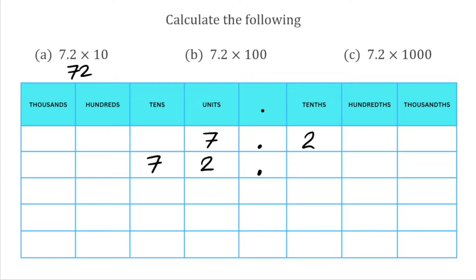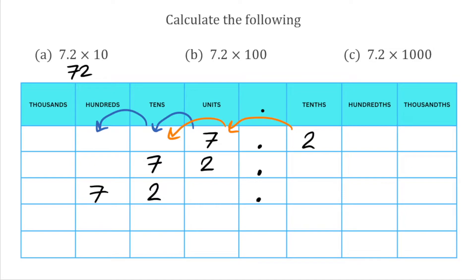So I've got 72 then my decimal point, so the answer is just 72. For the next question we've got 7.2 multiplied by 100. Because we're multiplying, we're going to move our digits to the left, and because 100 has two zeros we're going to move all our digits two places. Our original 7 in the units column moves two spaces to the left into the hundreds column. Our 2 from the tenths also moves two spaces to the left into the tens column. We don't have anything for our units so we put a placeholder zero in there. So our answer to that is 720.